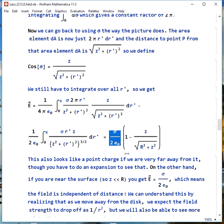If we get very far away from this, this will also look like a point charge, but you'd have to do an expansion to figure that out. On the other hand, if you're very close to the surface, so z is much less than r, you get e is sigma over 2 epsilon naught, which means the field is independent of distance.